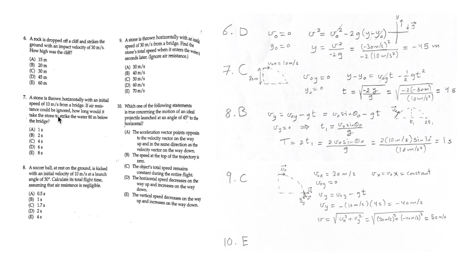For question 7, a stone is thrown horizontally with an initial speed of 10 m/s from a bridge. Ignoring air resistance, how long does it take to strike the water 80 meters below? The initial y-component of velocity is 0. Using t equals the square root of minus 2y over g, with y equal to minus 80 meters, gives t equal to 4 seconds. So the answer is C.